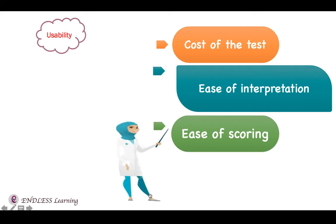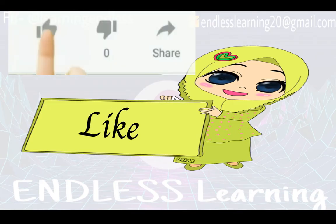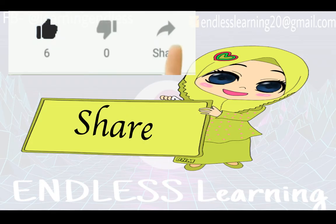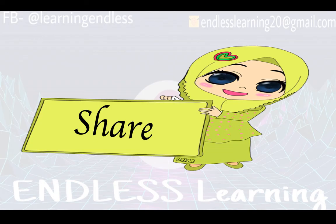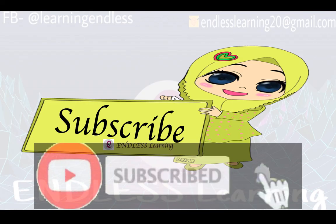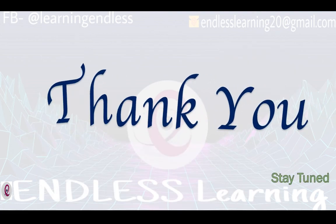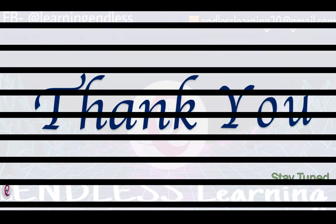I hope you have understood objectivity and usability. We have now discussed all five characteristics of a good evaluation tool: reliability, validity, norms, objectivity, and usability. Don't forget to like and share this video so that the student community can benefit. If you are new to our channel, click the subscribe button and press the bell icon to get notifications of upcoming lectures. Thank you all for supporting us. God bless you.